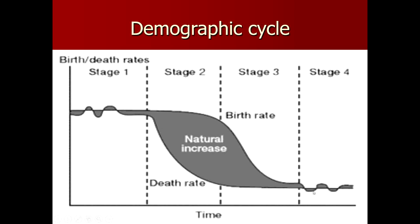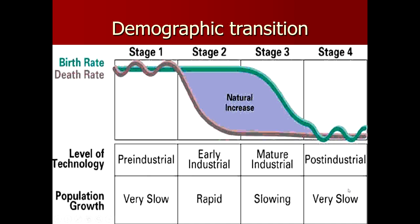Stage four shows that the birth rate is low and death rate is also low — they are neutralizing each other, and the population again goes into a stationary phase. Stage one was observed in the pre-industrial era with very low population growth. Stage two was the early industrial phase with rapid population increase. Stage three, as birth rate declines but population still increases, is the late expanding phase.